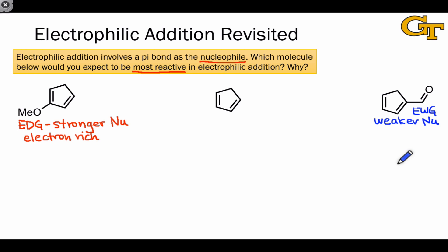And again, you can think in terms of a currency analogy. Because the withdrawing group is literally taking electrons away from the pi system, the carbons here are more electron poor.